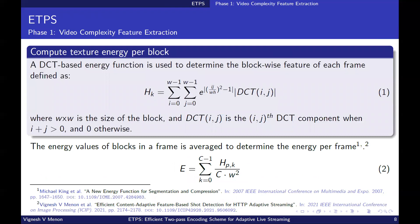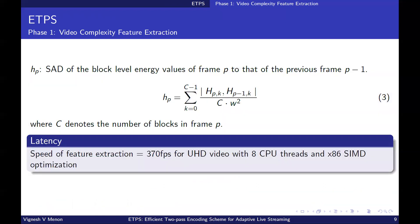The first phase of the first pass is the video complexity feature extraction. A DCT-based energy function is introduced to determine the block-wise texture of each frame as shown in the equation here. The texture is averaged to determine the spatial energy feature denoted as E as shown in the equation below. Furthermore, the block-wise SAD of the texture energy of each frame compared to its previous frame is computed and then averaged for each frame of the segment to obtain the average temporal energy H as shown in the equation here. Please note that the speed of feature extraction is about 370 frames per second using 8 CPU threads and x86 SIMD optimization.